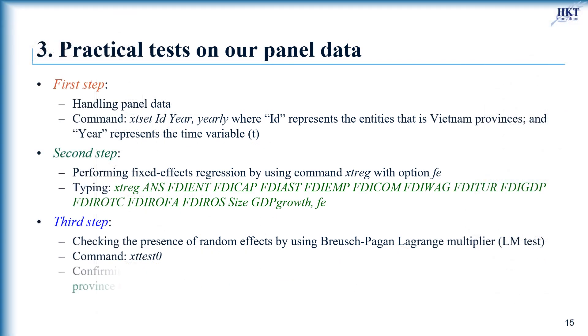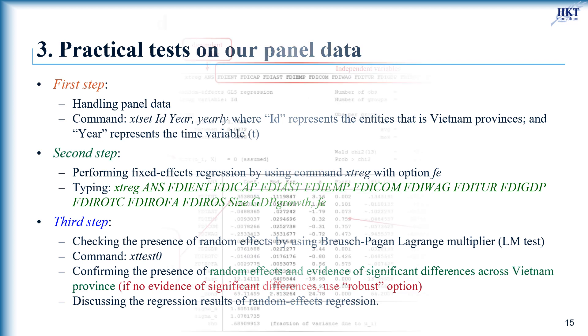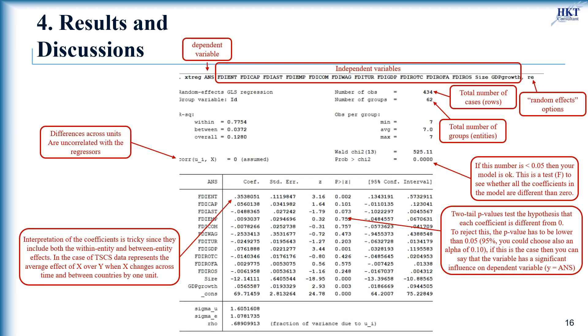So this statistical significance provides an evidence of significant differences across Vietnam provinces. The results of random effects model are valid and can be used for assessing the proposed research hypotheses. We can now discuss the regression results. We explain here some basic indicators of results of random effects regression on the screen.